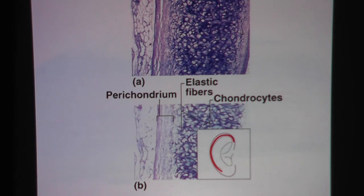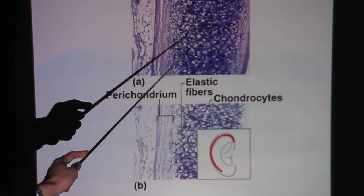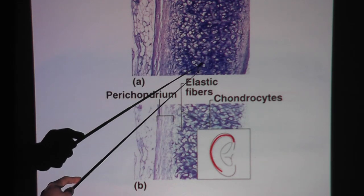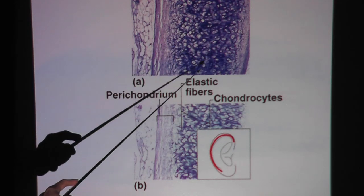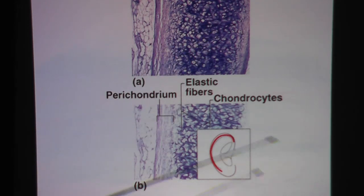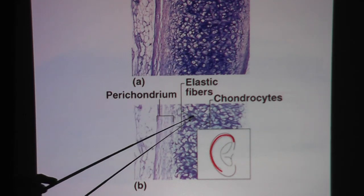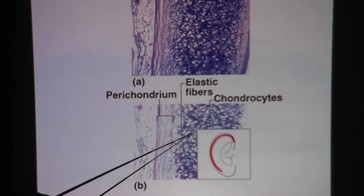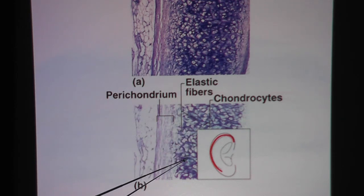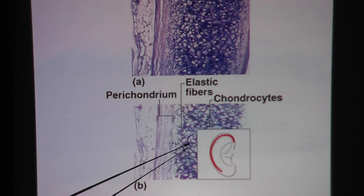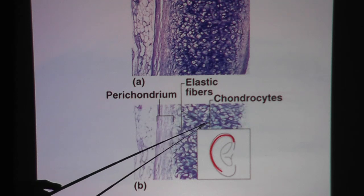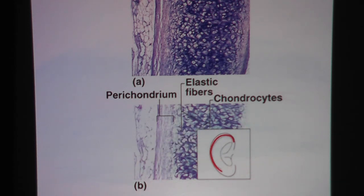Here we have the real picture of elastic cartilage. You see how dark it stains because of all of the elastic fibers. Here's the drawing, and in the drawing you can see the little tiny cells called chondrocytes in the lacuna. Outside these cells there's a dark tone to the image because of the elastic fibers.